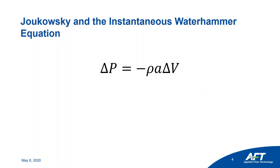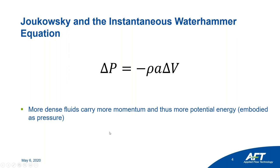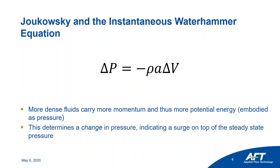Other components of the Joukowsky equation include density. More dense fluids carry more momentum, and more momentum means more energy, causing a more significant pressure surge. Importantly, the delta P is a change in pressure — it's a surge on top of whatever your steady state pressure is. So if your pipe is rated for 500 psi, your pressure surge is 450 psi, and your steady state is 60 psi, the highest pressure you would expect to see is 510 psi — which would break your 500 psi rating.